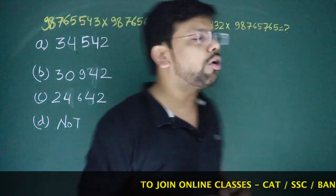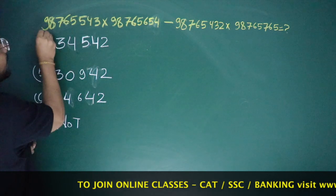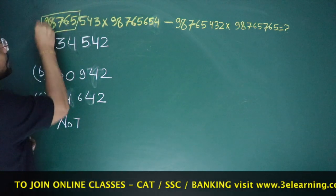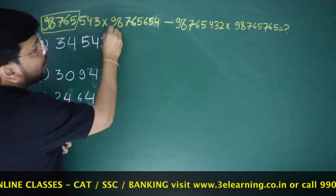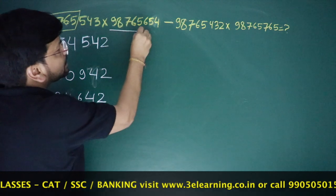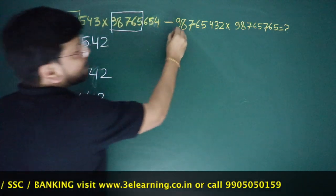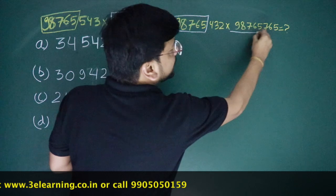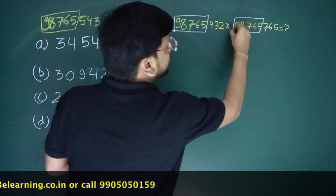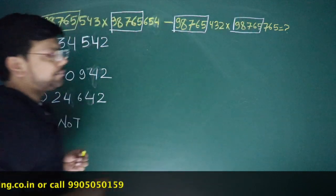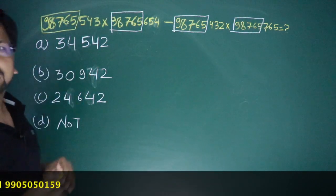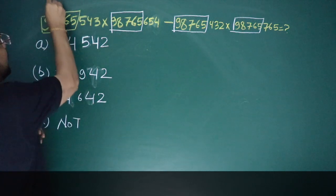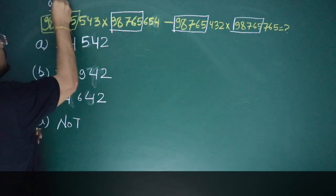If you observe this question, you will see that in 98765, every number follows a pattern. It is in 98765, every number in sequence. I created this type of question a few days ago and posted it. Whenever you have such a question, it is actually a very simple question. I would say: 9, 8, 7, 6, 5...